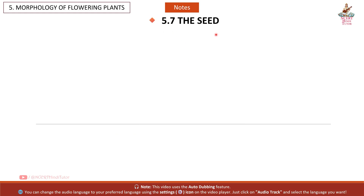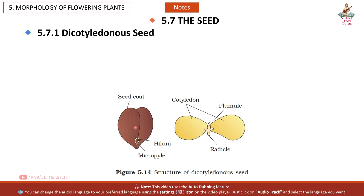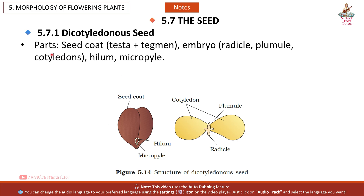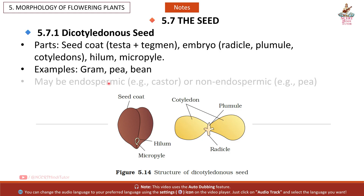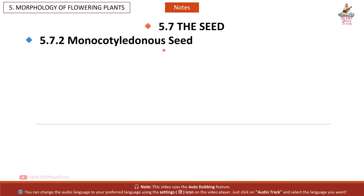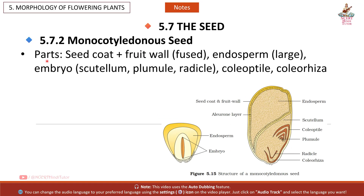5.7 The Seed: Dicotyledonous seed — parts include seed coat (testa plus tegmen), embryo (radicle, plumule, cotyledons), hilum, and micropyle. Examples: gram, pea. May be endospermic, e.g. castor, or non-endospermic, e.g. pea. Monocotyledonous seed — seed coat and fruit wall are fused; large endosperm; embryo has scutellum, plumule, radicle, coleoptile, and coleorhiza. Example: maize.